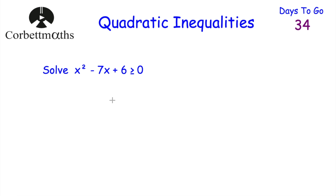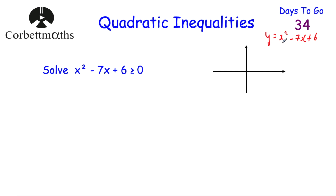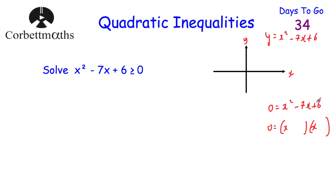Let's look at another question. This time, solve x squared minus 7x plus 6 is greater than or equal to 0 — feel free to press pause and try this now. The first thing I'm going to do is sketch y equals x squared minus 7x plus 6. To sketch it, let y equal 0: x squared minus 7x plus 6 equals 0. Factorizing — if we couldn't, we might use the quadratic formula or completing the square — I'm thinking minus 1 and minus 6, because minus 1 times minus 6 is 6, and minus 1 plus minus 6 is minus 7. So x equals 1 or x equals 6.